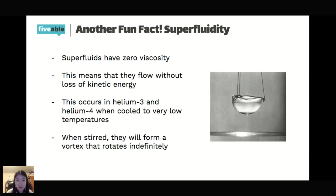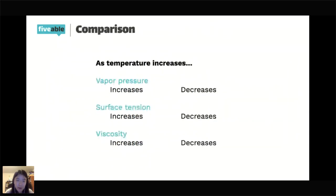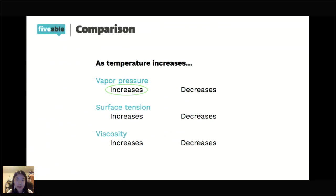Let's compare vapor pressure, surface tension, and viscosity in relation to temperature. As temperature increases, vapor pressure increases. Remember, vapor pressure is the pressure exerted by the gas on the liquid in a closed container at equilibrium. Adding more energy means the gas particles move faster and exert more pressure on the liquid.